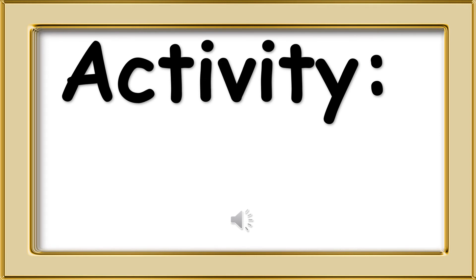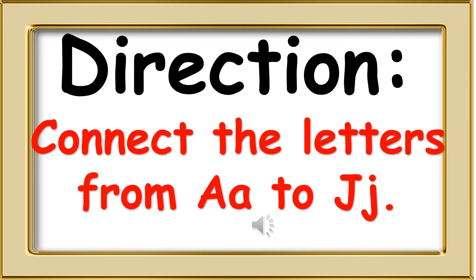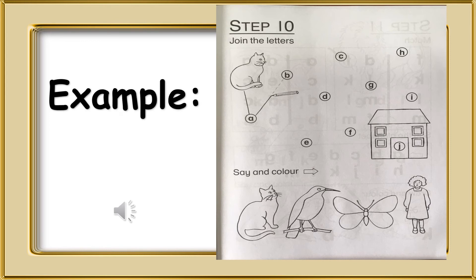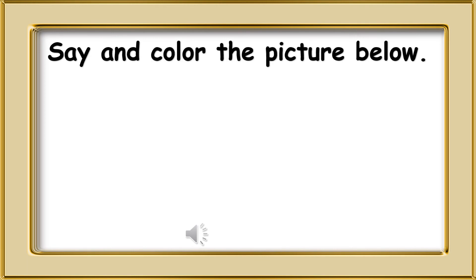Activity. Direction: Connect the letters from A to J. Example: A, B, C.